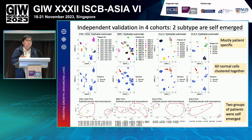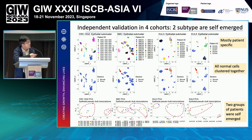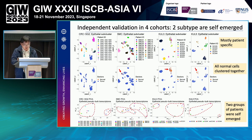We then validated our findings using four different cohorts. We again clustered all epithelial cells using the marker genes identified previously, and found similar observations — patient-specific clusters for all epithelial cells with one normal cluster consisting of all collected normal samples. Using PCA analysis of patient-specific pseudobulk data, we again found the two subgroups self-emerging in all four cohorts, supporting our previous observations from the training cohort.